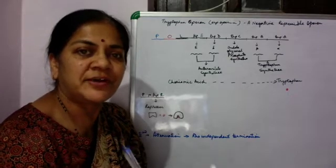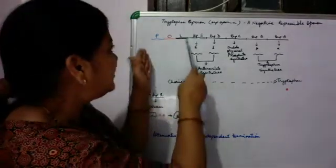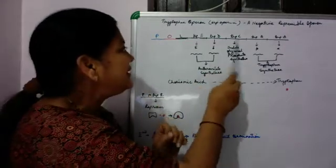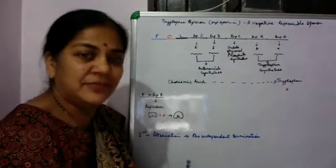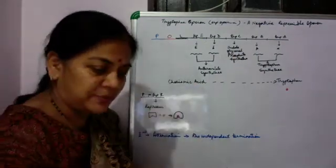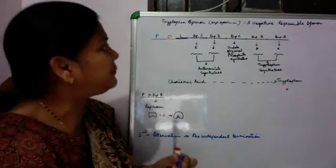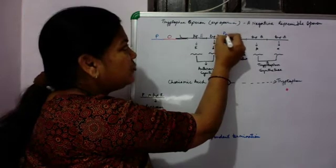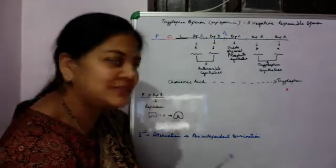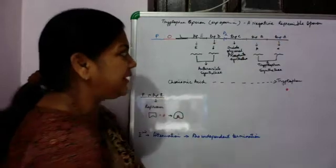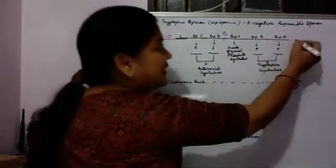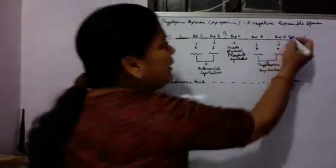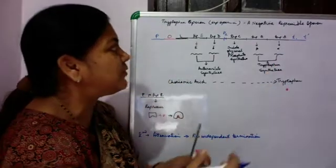An operon consists of structural genes along with regulatory regions. There are five structural genes in the tryptophan operon: E, D, C, B, and A, which are controlled by an operator region and a promoter. There is another weak promoter, P2, at the distant downstream end of trpD, which is responsible for enhanced synthesis of trpC, B, and A. There are two transcription termination sites downstream of trpA: T1 and T-prime.